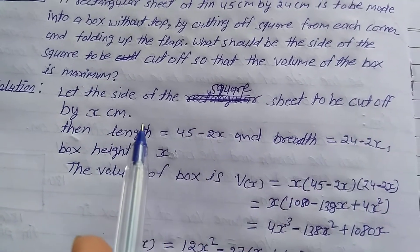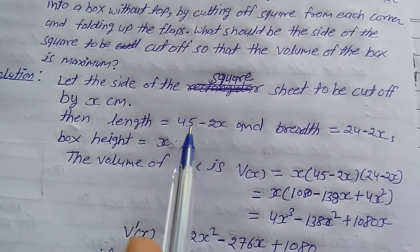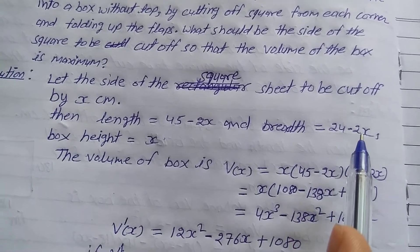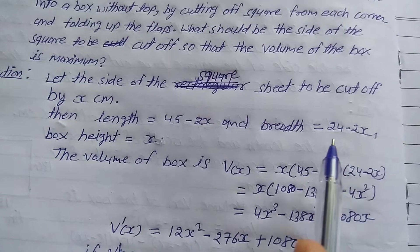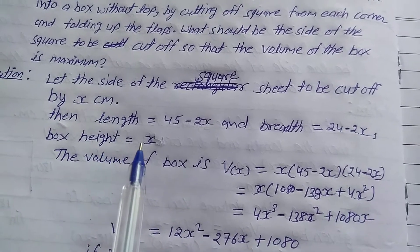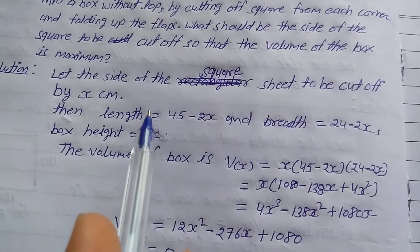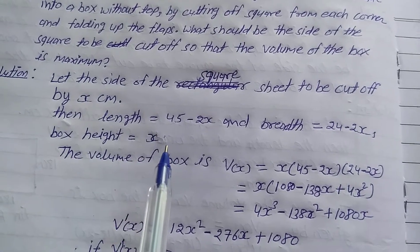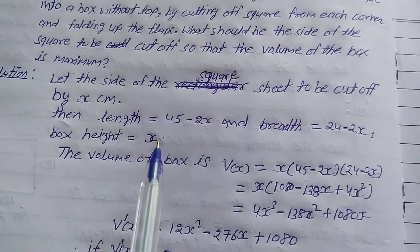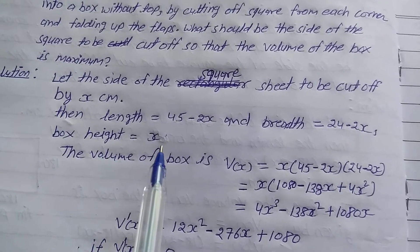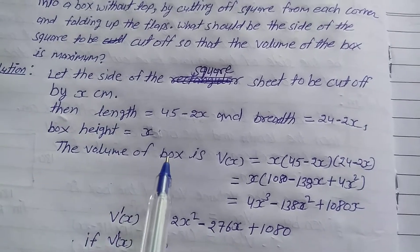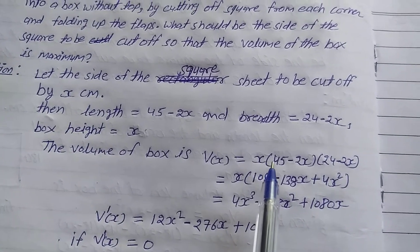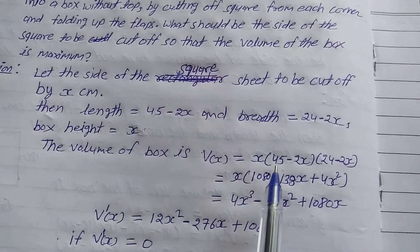Then length is equal to 45 minus 2x, and width is equal to 24 minus 2x, and the box height is equal to x. The square piece cut off is x centimeters, so height is x.